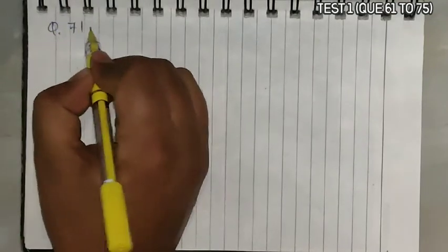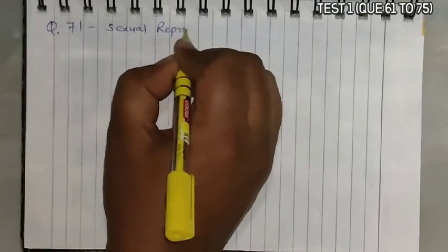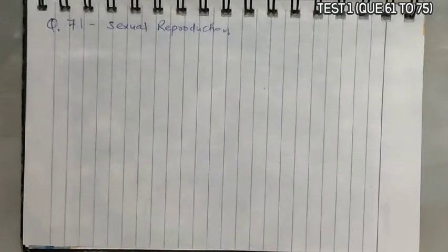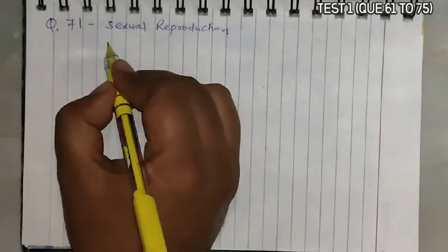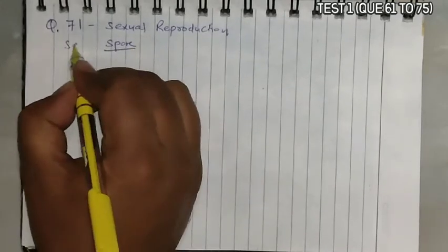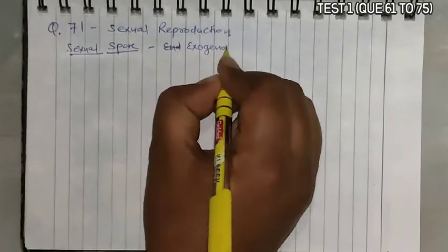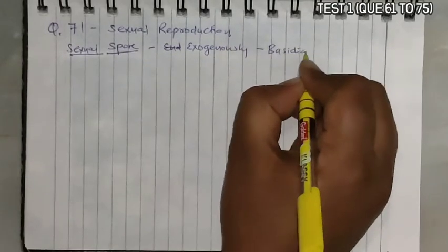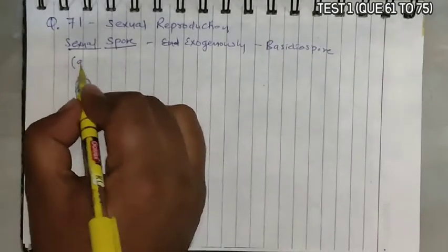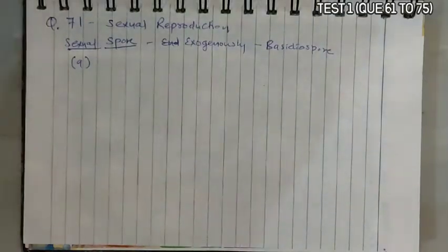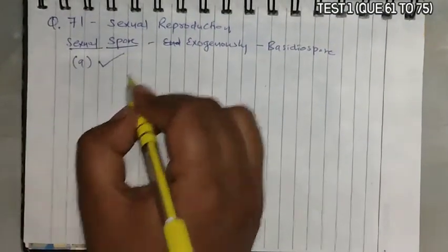Question 71: After karyogamy followed by meiosis, spores are produced exogenously. This is a question of sexual reproduction. The spores produced exogenously through sexual reproduction are basidiospores. Option A is Agaricus, and Agaricus has basidiospores because it belongs to Basidiomycetes — so that becomes the answer.